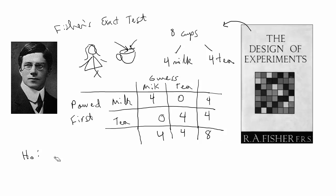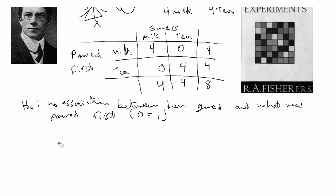Fisher's null hypothesis was that there was no association between her guess and what was really poured first. This can also be stated as the odds ratio is equal to one, and before he tested the experiment, he said we're going to reject this hypothesis if the p-value is less than 0.05.